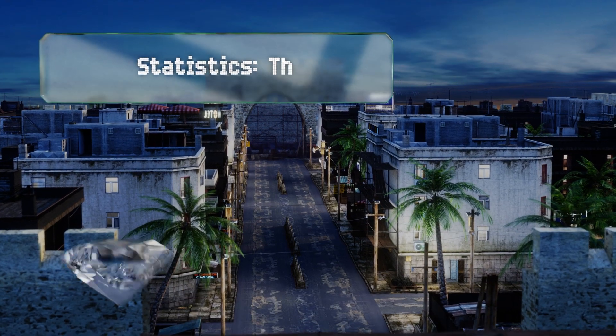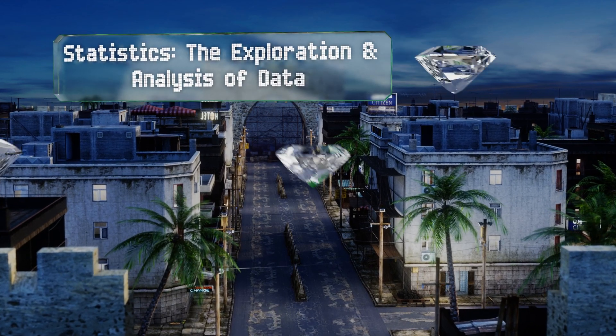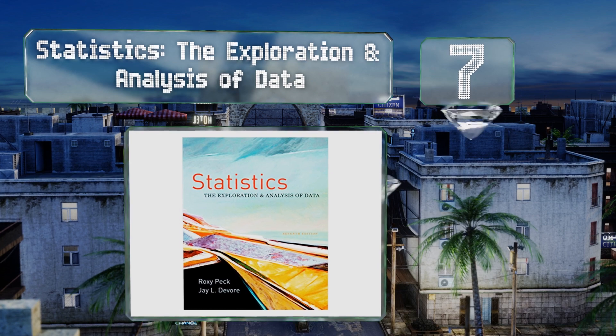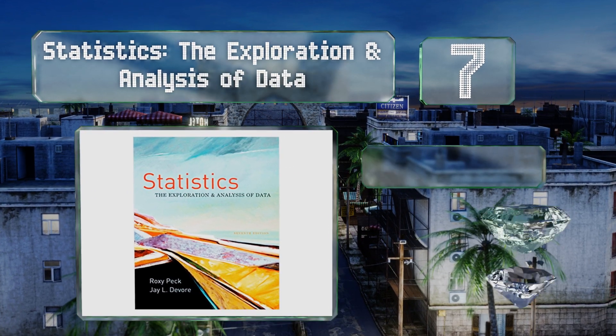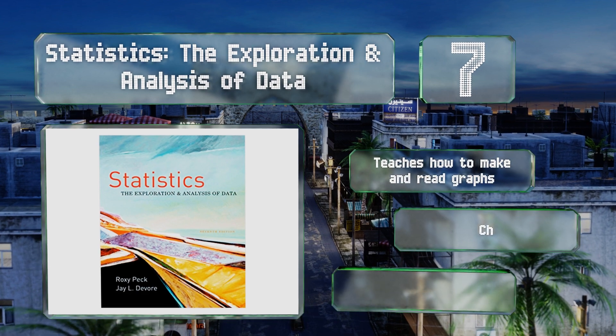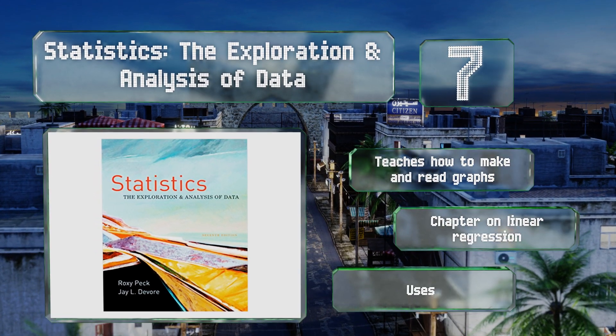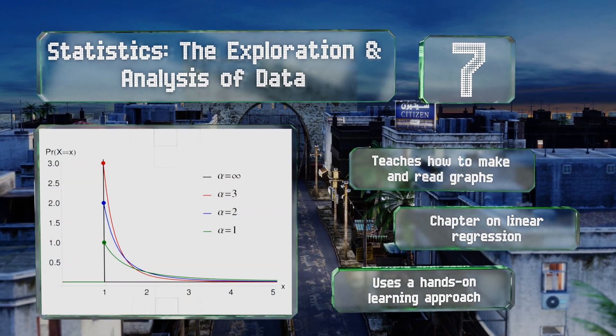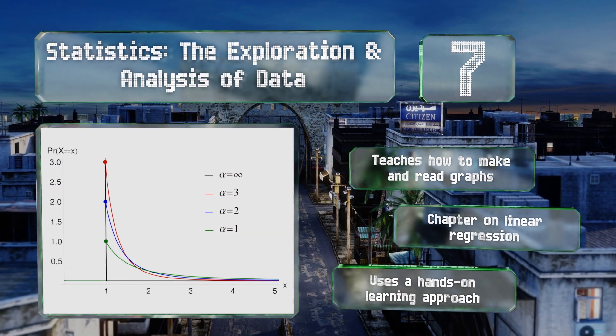At number seven, in the Exploration and Analysis of Data, the authors intentionally use attention-grabbing examples to keep you interested in the subject matter. They also often substitute words for symbols to make it easier for beginners to grasp. It teaches you how to make and read graphs and includes a chapter on linear regression.